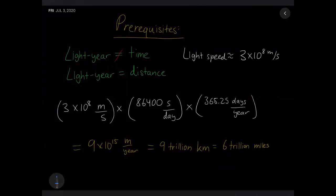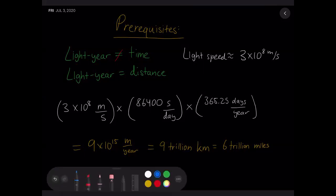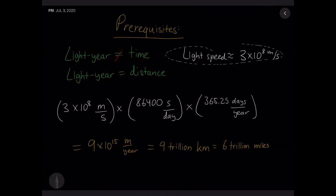A common misconception is that a light year is a measurement of time — it is not. It is a measurement of distance: the distance that light travels in a year. The speed of light is about 300 million meters per second, or 3 times 10 to the 8 meters per second in scientific notation.